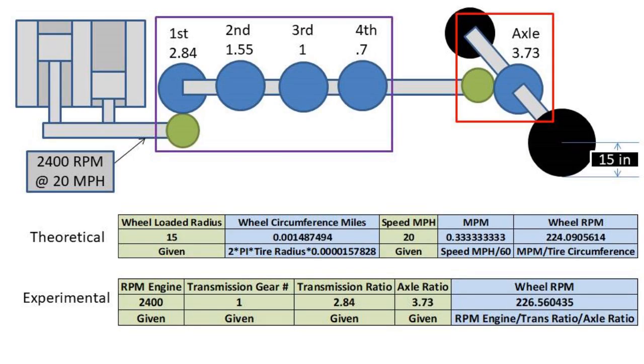So now let's solve for the experimental wheel RPMs. We can take the engine RPMs and divide by the transmission gear ratio and then divide by the axle ratio. We get about 226 wheel RPMs for our experimental value.